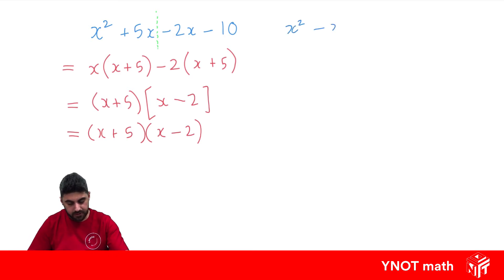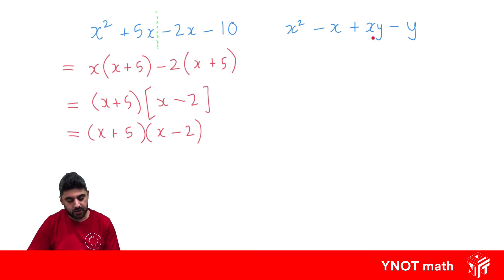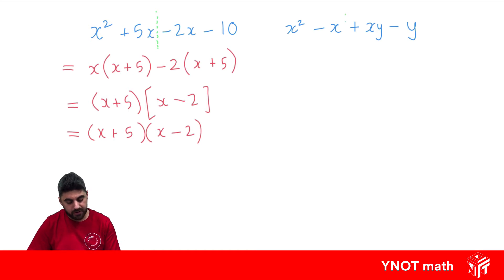Let's look at another example: x squared minus x plus xy minus y. This one we can't simplify at the start like we could have with the previous one — there are no like terms here, so we have no choice but to try and factorize by grouping in pairs. Let's try separating these pairs and looking for common factors.